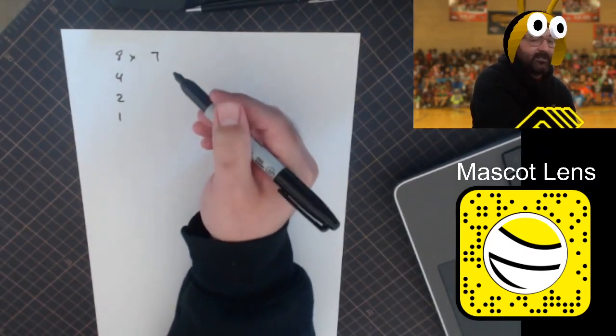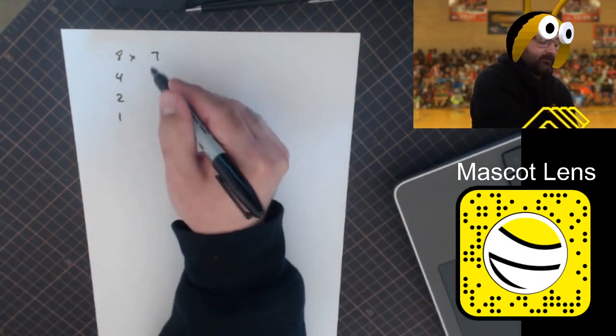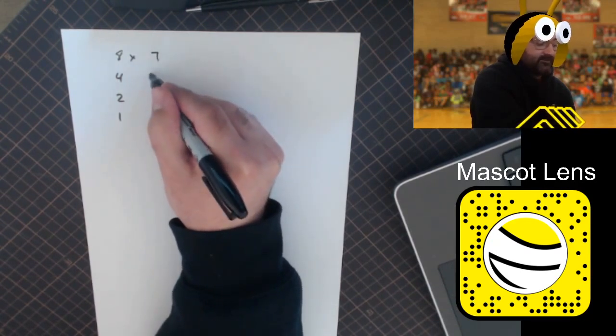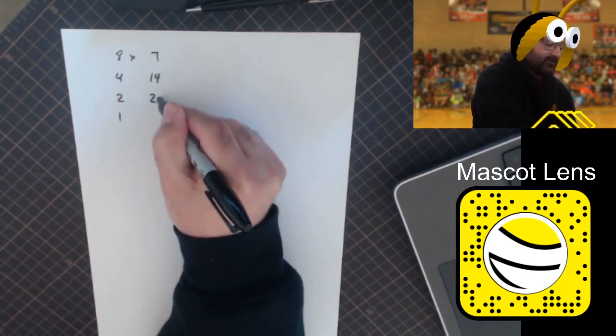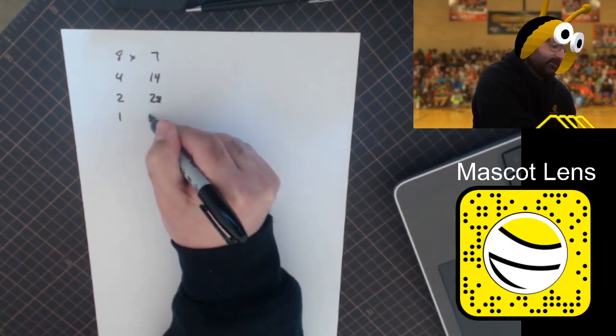And in the second column, do the opposite and go up by double. So 7 plus 7, 14 plus 14, 28 plus 28.